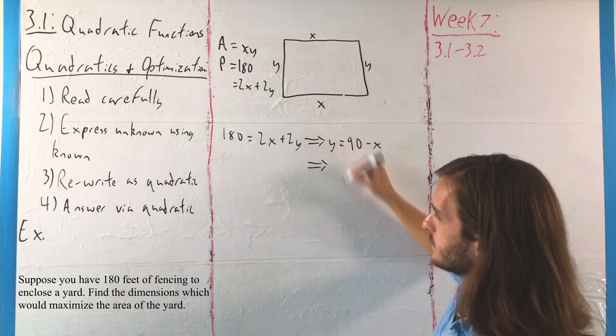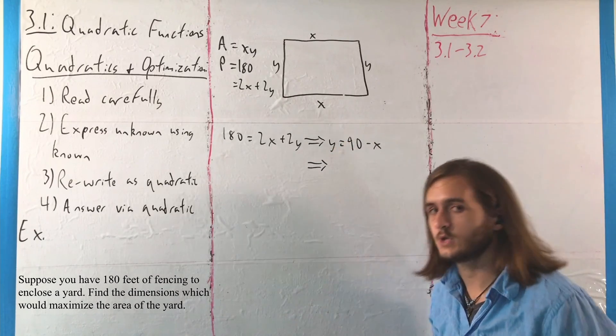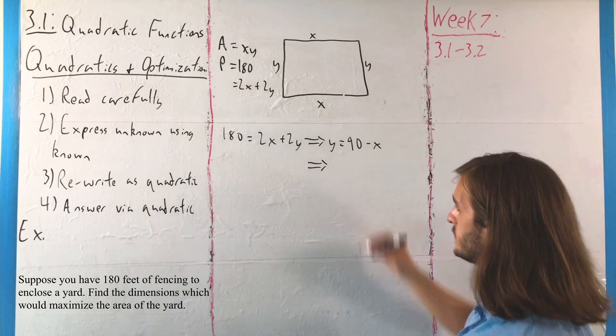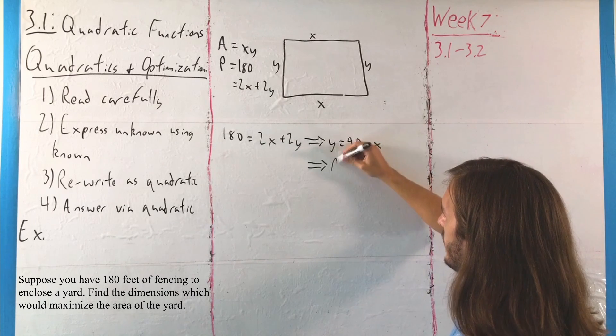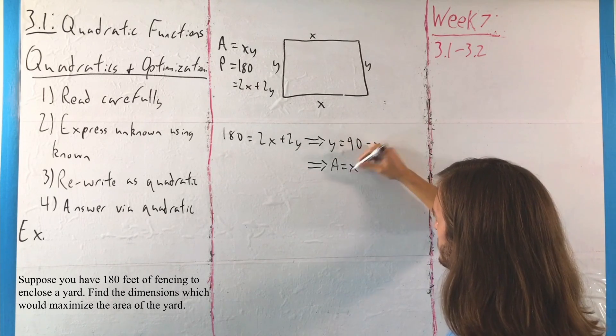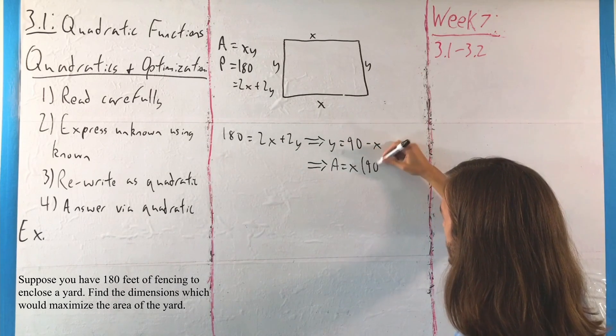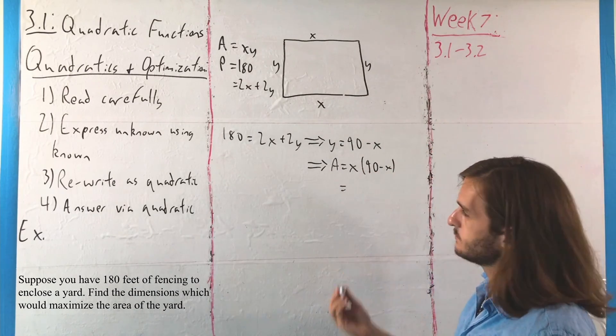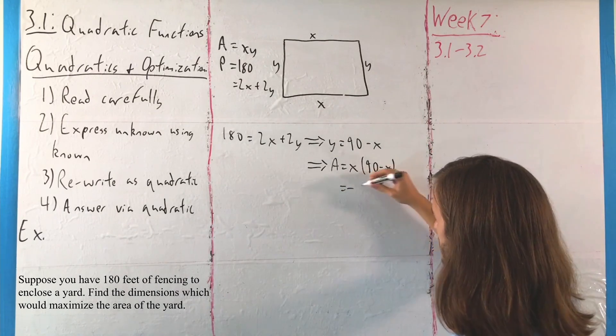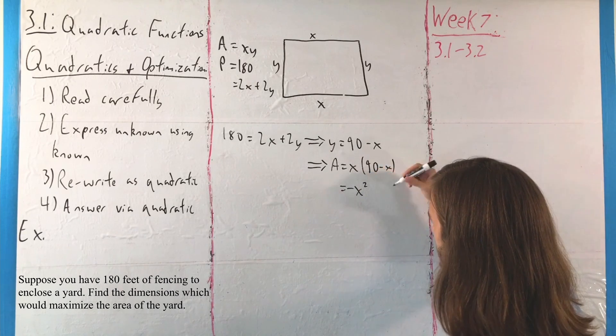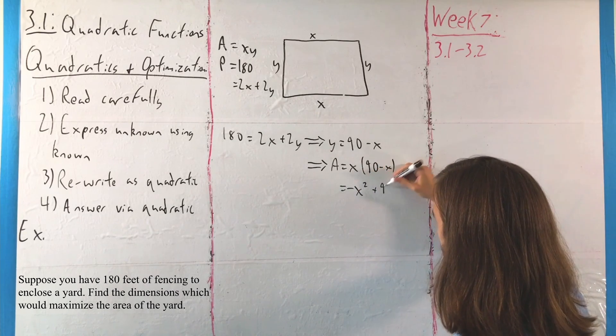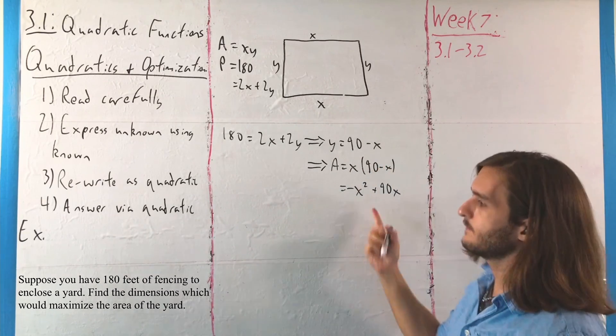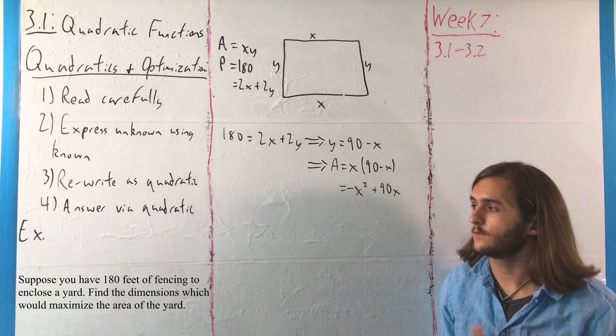And when we have that y equals 90 minus x, that means that for our third step to get it into that quadratic flavor we want, we would have that the area is equal to x times y, x times 90 minus x, or with a little bit of distribution and rearranging to put it into the more standard form, A is equal to negative x squared plus 90x.